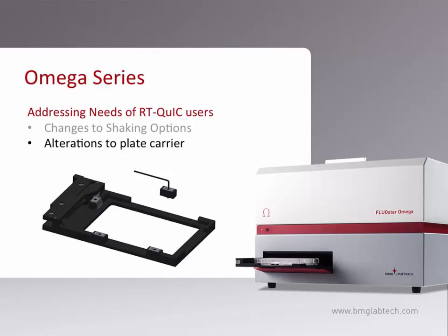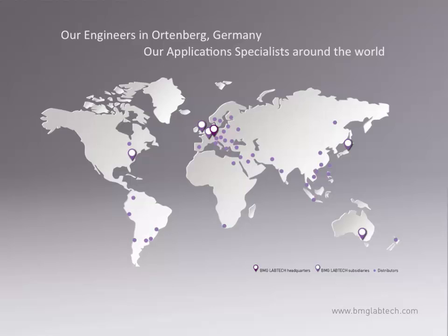During the robust shaking of the plate during the RT-QUIC assay, the possibility of a plate coming off the plate carrier was identified as a concern. To address this, BMG can now provide a plate carrier with clips designed to hold the plate more securely when the plate is pressed firmly into the carrier. These clips can easily be removed if you so choose. I would like to thank our engineers for designing the Omega as such a robust platform. Although it was not designed for RT-QUIC, it seems quite well suited to the task, and they have been instrumental in implementing changes helpful to RT-QUIC users.